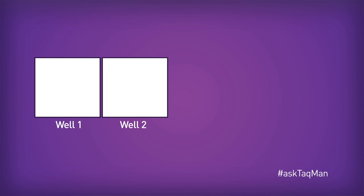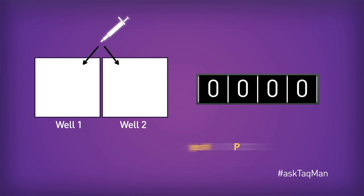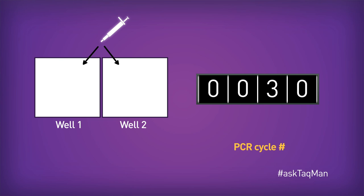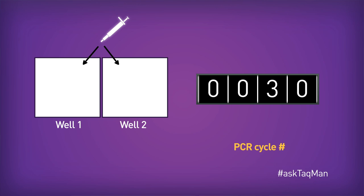Say that we're looking at two specific wells on my reaction plate. I pipette exactly the same amount of the same sample into each, and then amplify in real-time. A short time later, we reach cycle 30. As at every cycle, the instrument will take a reading of my reporter dye. I expect those two readings to be identical, since I started with the same reaction components. Unfortunately, they're not, due to a system inconsistency between these two wells.